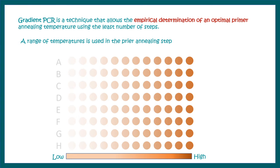In this installment, we'll talk about gradient PCR, which is a technique that allows an empirical determination of an optimal primer annealing temperature. So the goal of gradient PCR is to determine the optimal primer annealing temperature, which would give a specific amplification and good yield.